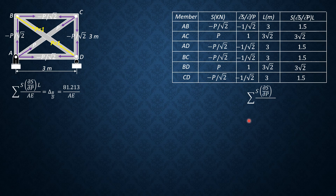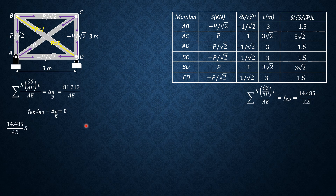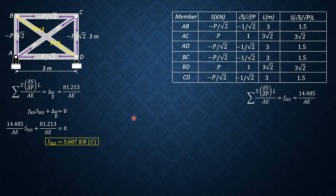Therefore we can now solve the summation of S·(∂S/∂P)·L / AE, which is also F_BD from the force method. It is 14.485/AE. So the compatibility equation is: F_BD × 14.485/AE + δ_BD = 0. Substituting: 14.485/AE × S_BD + 81.213/AE = 0. Cancel AE: S_BD = −81.213/14.485, so S_BD = −5.607 kN. That means it is a compression member. Therefore S_BD = 5.607 kilonewtons, compression. That's it for this problem.